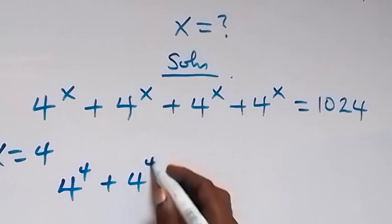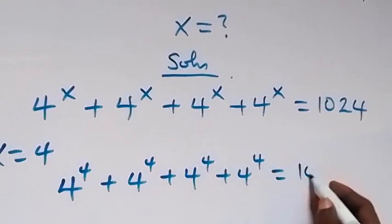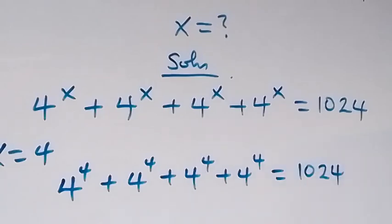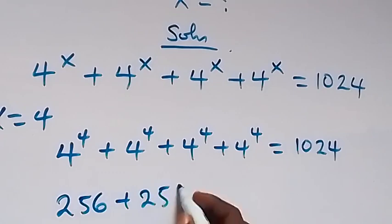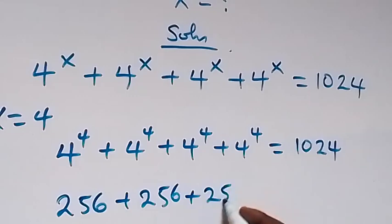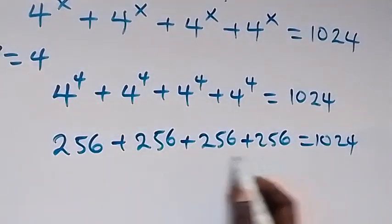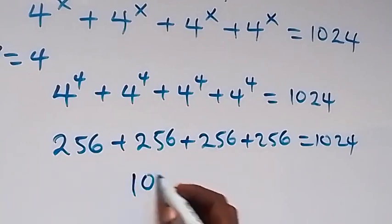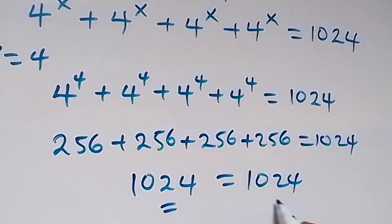Plus 4 raised to the power x plus 4 raised to the power 4. This equals 1024. We have 4 raised to the power 4, which is 4 multiplied by itself 4 times, giving 256, plus 256 plus 256 plus 256, which equals 1024. That is 4 times 256, which is 1024. Left hand side equals right hand side, and hence x equals 4 satisfies this given problem.